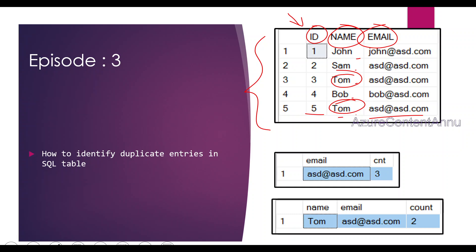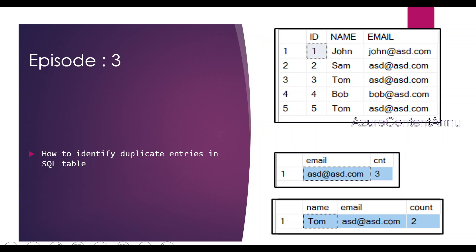Similarly, in the Email ID column, the entries are john@asd.com, asd@asd.com, asd@asd.com, bob@asd.com, and asd@asd.com again. So asd@asd.com has three entries — those are the duplicate records in the Email ID column. And if we combine Name and Email ID together, there is one duplicate: Tom and asd@asd.com.